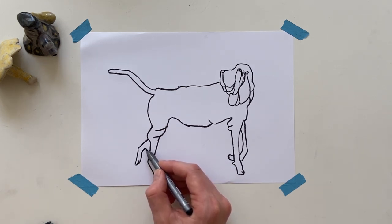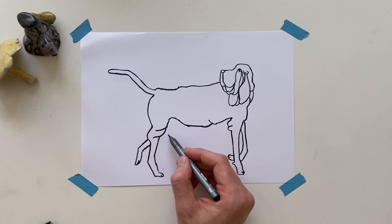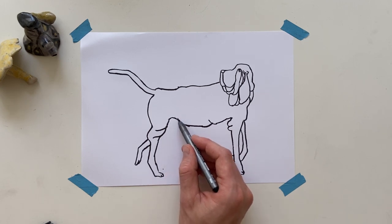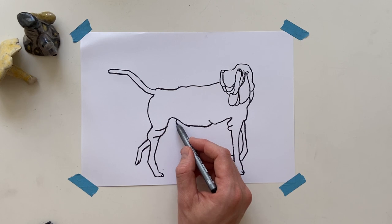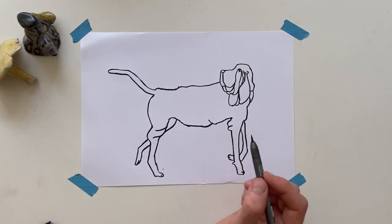Diagonal. And then you can follow it on the other side of the dog. There we go.